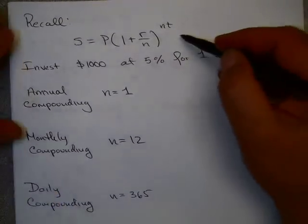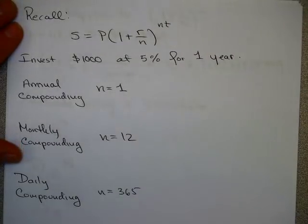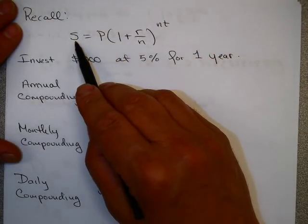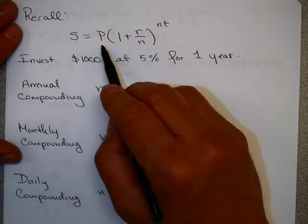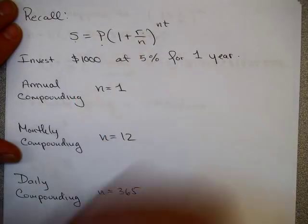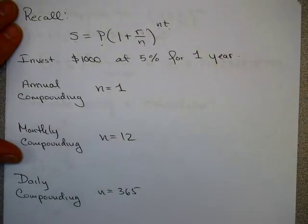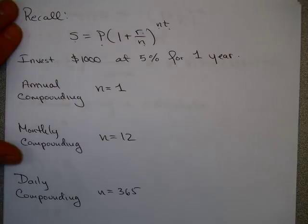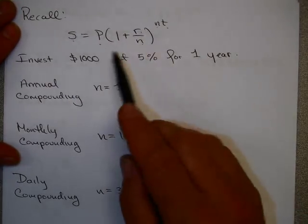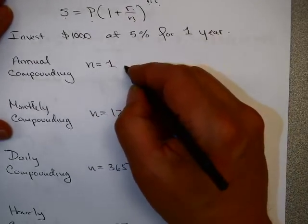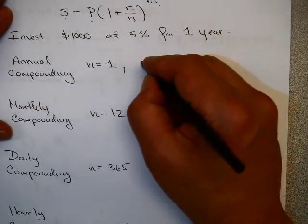Let's remember our information about compound interest. The future value, or the amount you'll have in the future, of an investment of P at an interest rate r, compounded n times per year for t years, was given by this formula. Let's practice a little bit with this. I'm just going to invest $1,000 at 5% for one year with annual compounding.